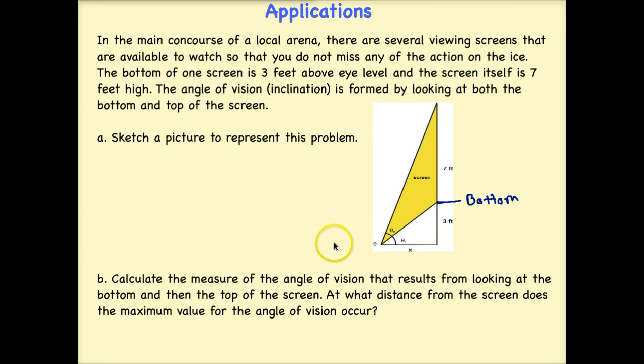Now I'm ready to solve whatever they asked me to solve. So in part B, it says calculate the measure of the angle of vision that results from looking at the bottom and then the top of the screen. So in other words, I'm trying to calculate theta sub 2. This problem though is also asking, at what distance from the screen does the maximum value for the angle of vision occur? So I also need to find x. So how can we do this using inverse functions?